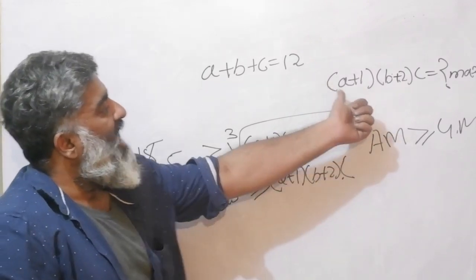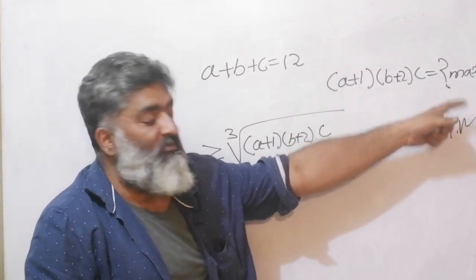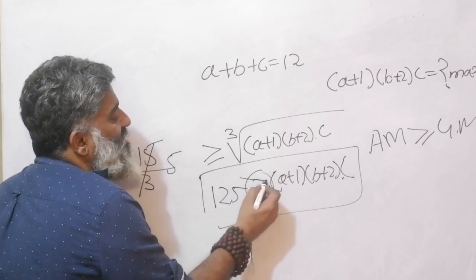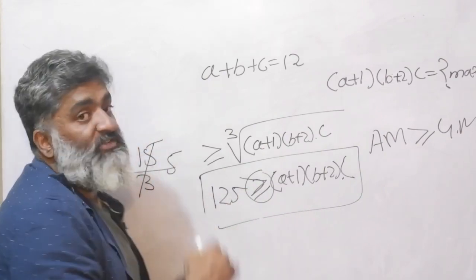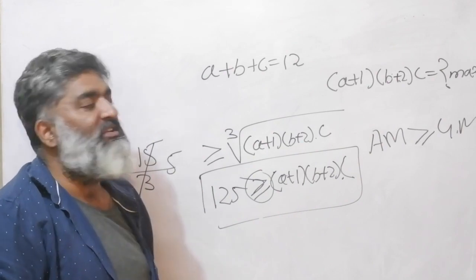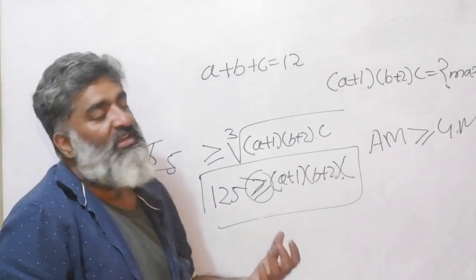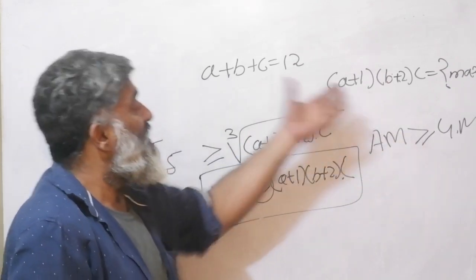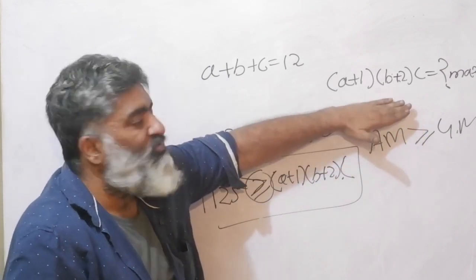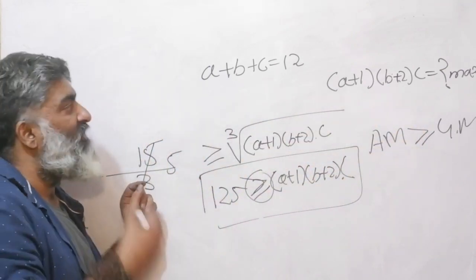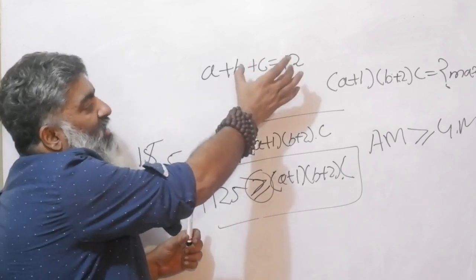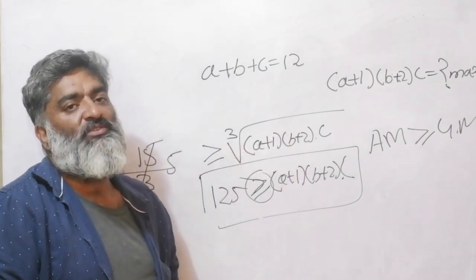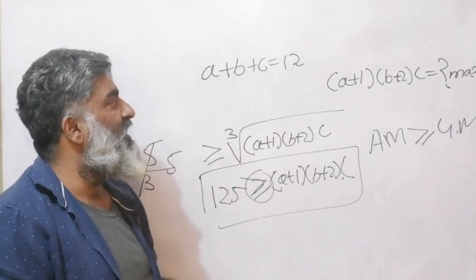So the maximum value of (a+1)(b+2)(c) is 125. The product is less than or equal to 125, so the top limit is 125. I'm just manipulating the same fundamental game — the story changed slightly, but sticking to the terms on both sides of AM ≥ GM makes it straightforward.